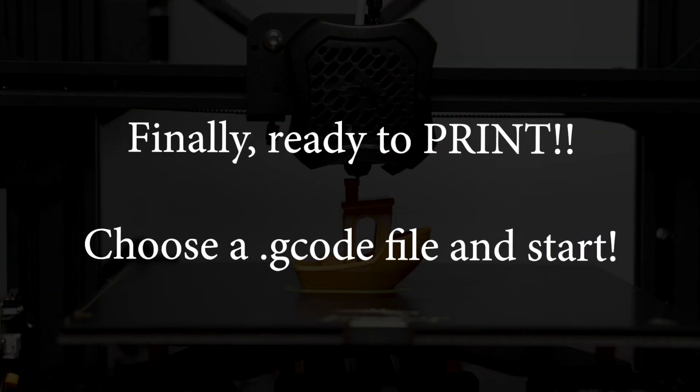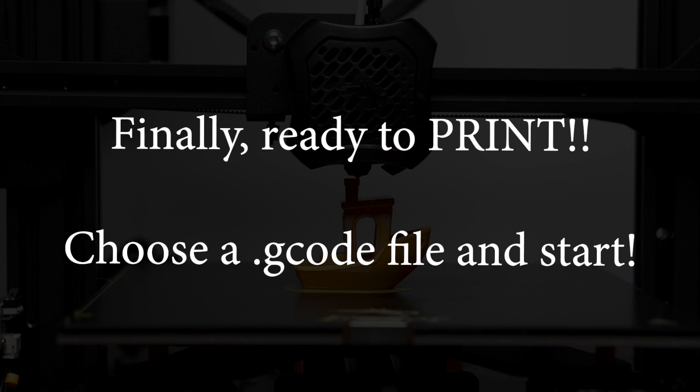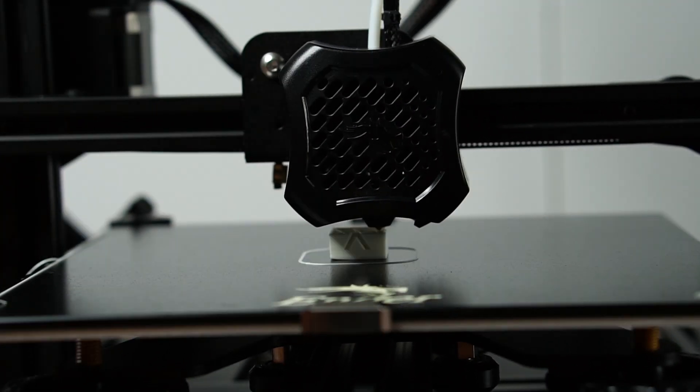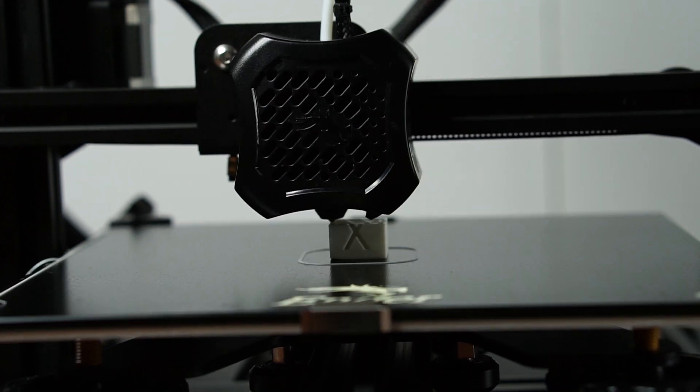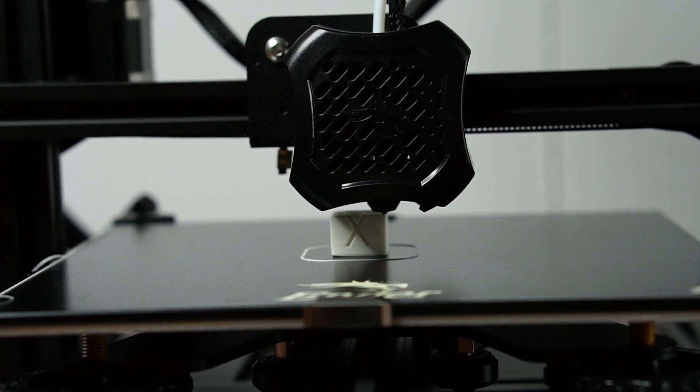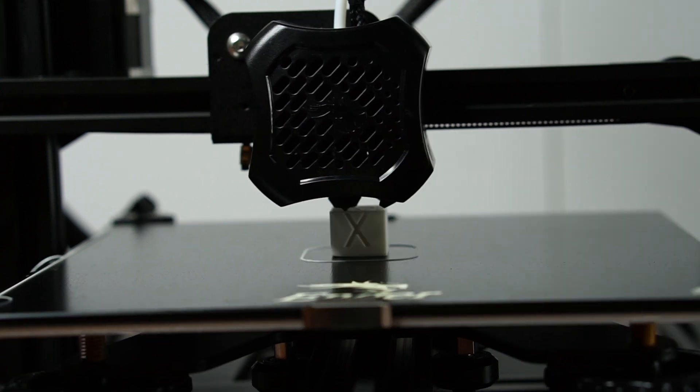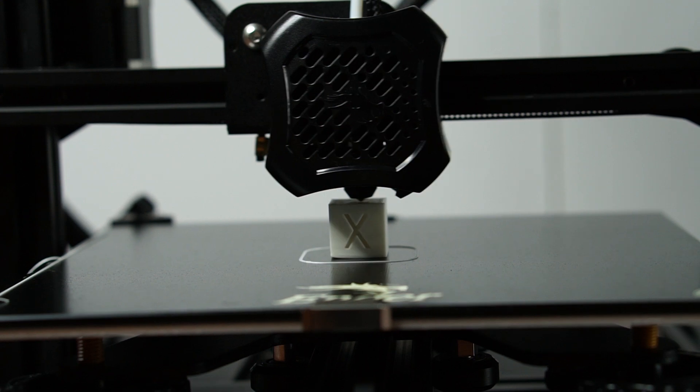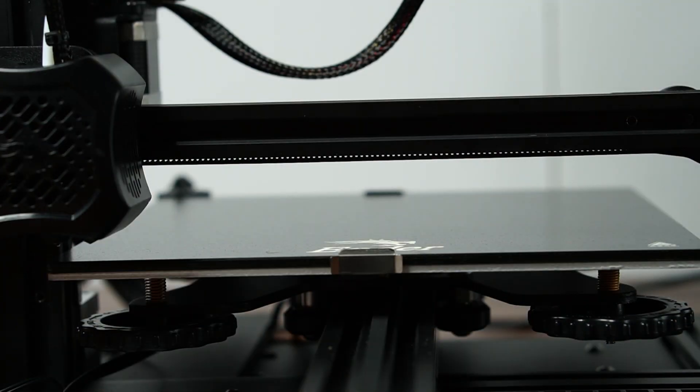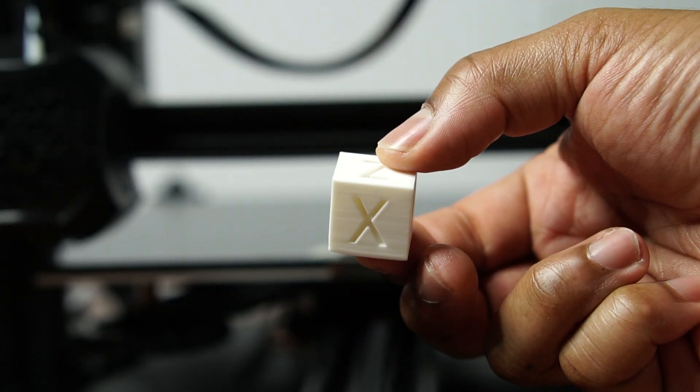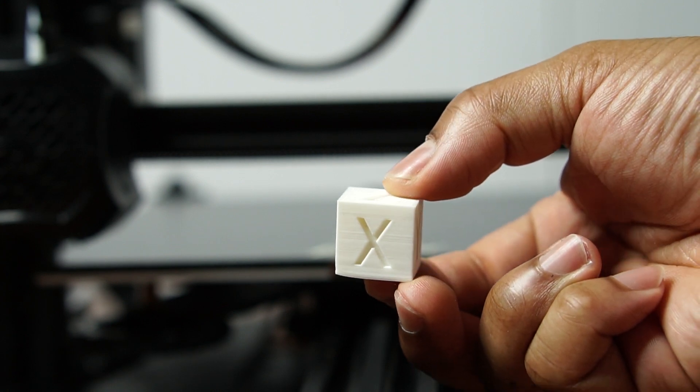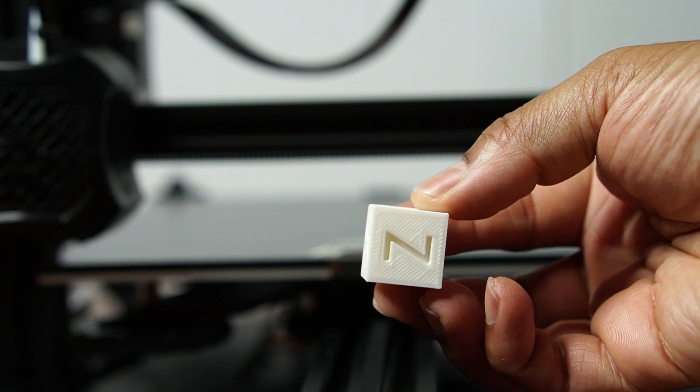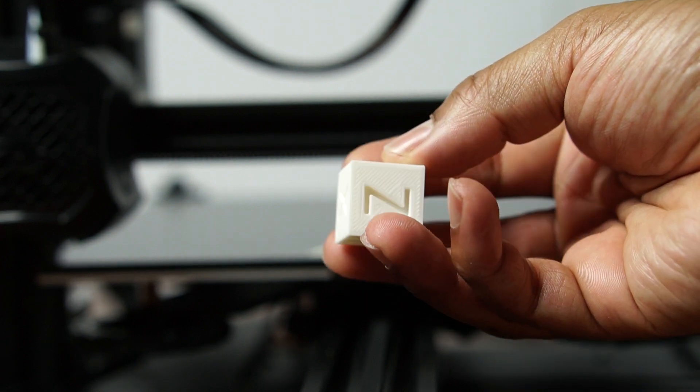And now you're ready to print, so choose a G-code file and get it started. And my first print was a calibration cube that I got off of Thingiverse. Here's a look at the finished product. Overall it printed well. I can see that it curved up at the bottom a little so that's a bed adhesion issue that I will fix later.